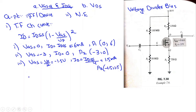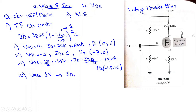In the case of the N-channel depletion type MOSFET, we also have some positive VGS values. For VGS = +1V, substituting IDSS = 6 mA and VP = −3V into the Shockley equation gives ID = 10.67 mA. So the fourth point is VGS = 1V on the x-axis and ID = 10.67 mA on the y-axis.